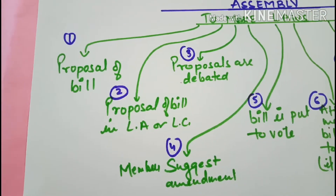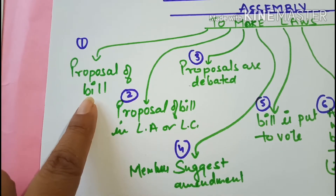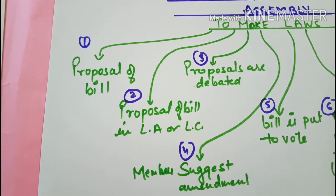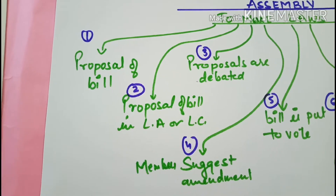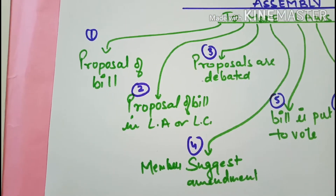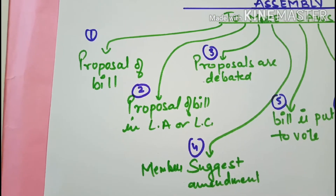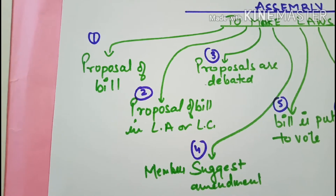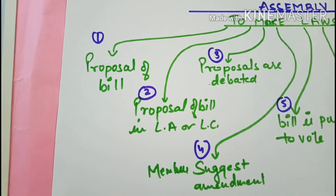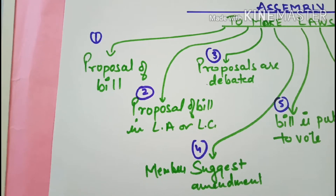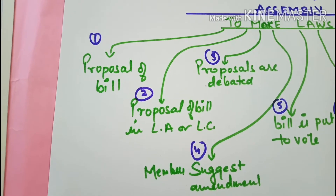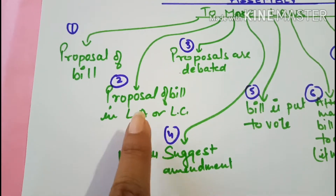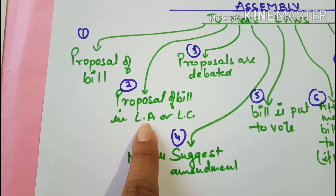Sabse pehla hai proposal of bill, or to amend an existing one. Yaani ki ek naye law ke liye proposal, jis ko bill bolte hai, usko introduce kiya jata hai. Ya phir existing law mein, jo law ban chuki hai, us mein jo kuch changes karne hai, toh uska bhi proposal rakhha jata hai. Yeh proposal dono hi houses mein rakhha jata hai.